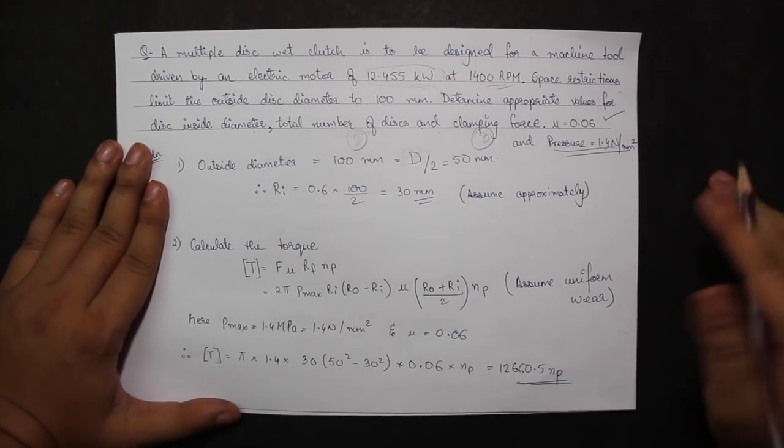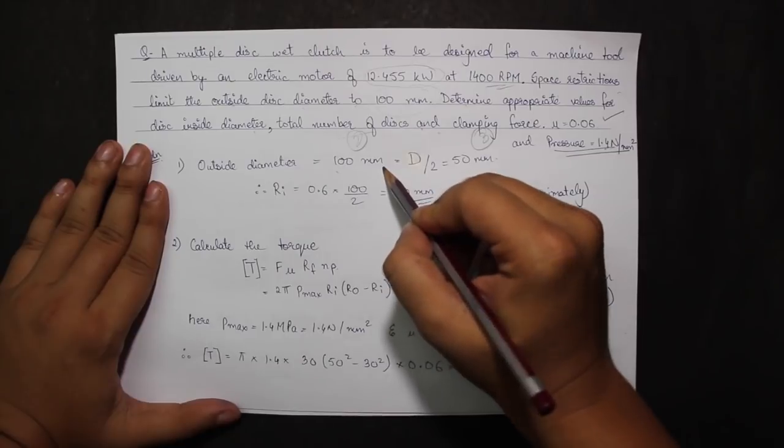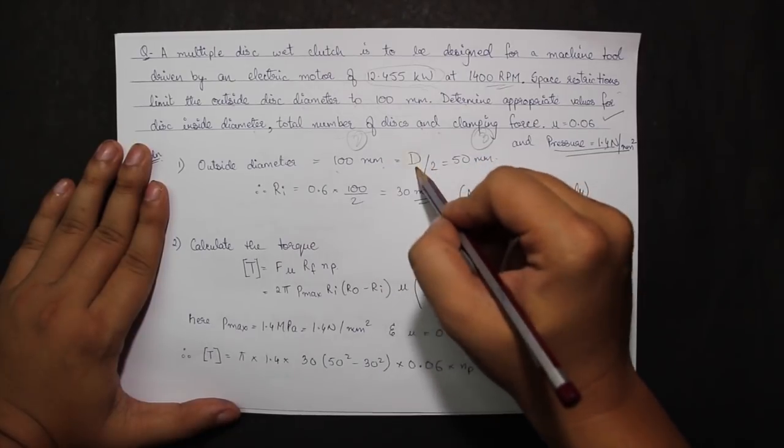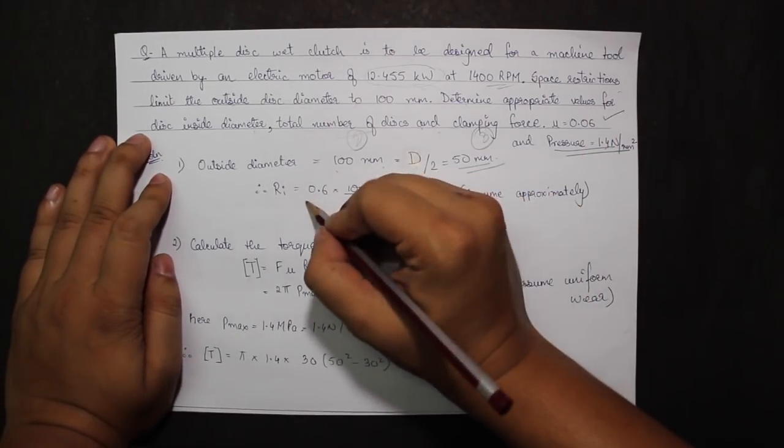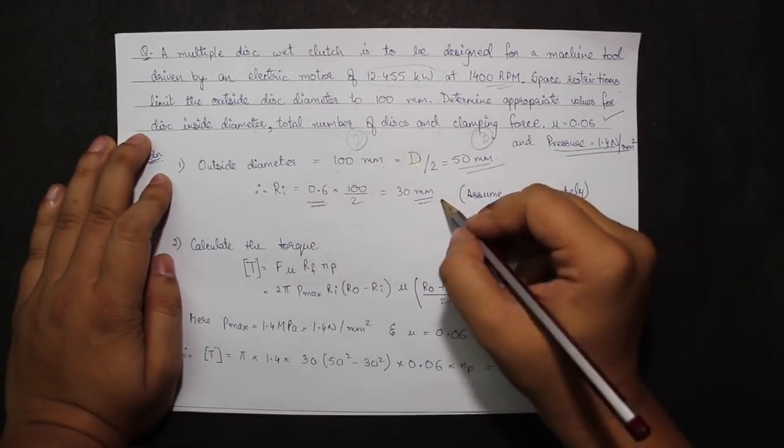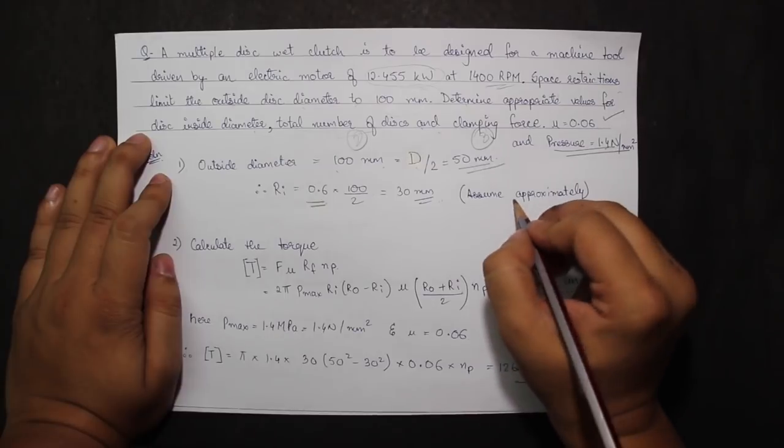Now outside diameter is equal to 100 mm, or R0 is equal to 100 by 2, that is 50 mm. Therefore RI would be 0.6 times 50, that is 30 mm. 0.6 I have assumed approximately.